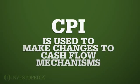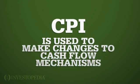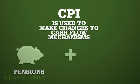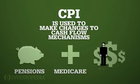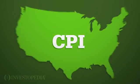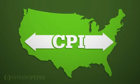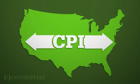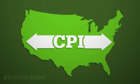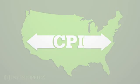The CPI is used to make changes to cash flow mechanisms such as pensions, Medicare, and cost of living adjustments. This versatility means the CPI affects nearly every market and person in America.